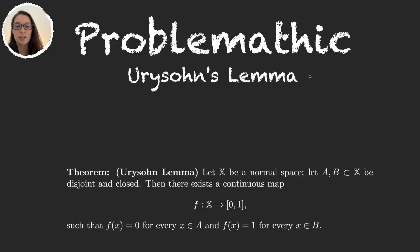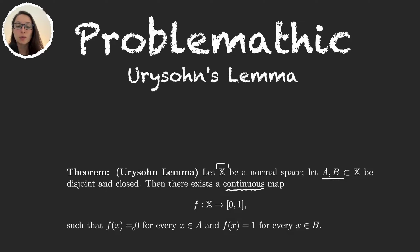Let's start with this theorem. We have X, a topological space that is normal. We have two closed and disjoint sets in X, A and B. Then what the theorem tells us is that there will exist a continuous function from the space X to [0,1] that takes the value 0 for all the elements in A and the value 1 for all the elements in B.